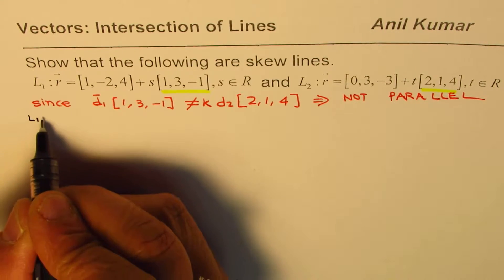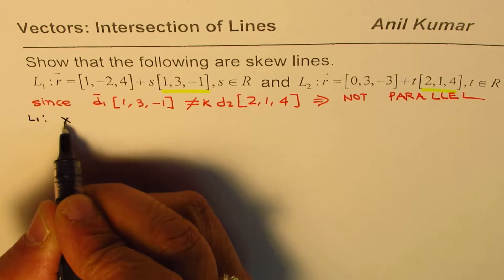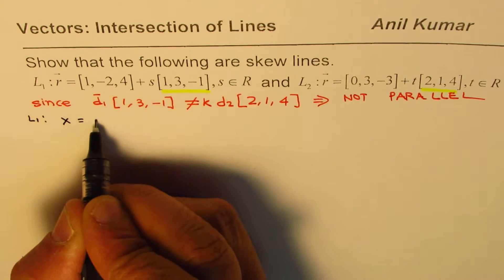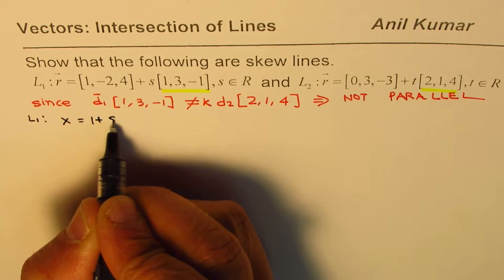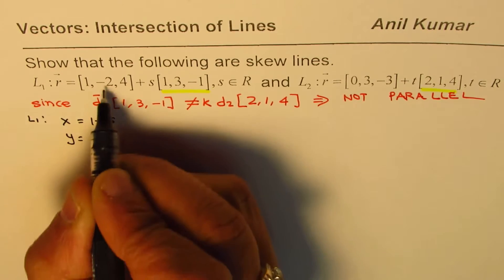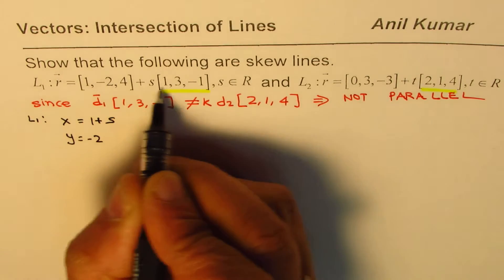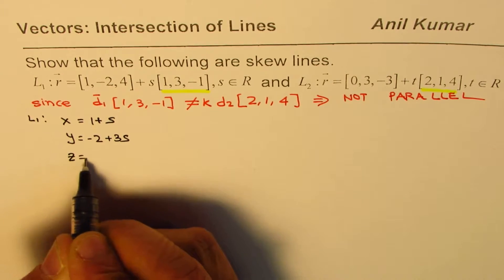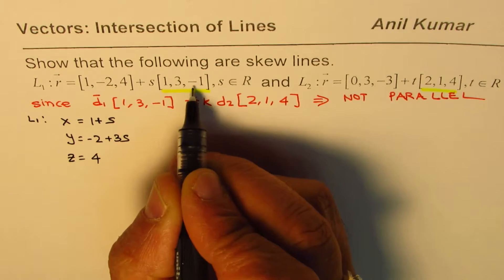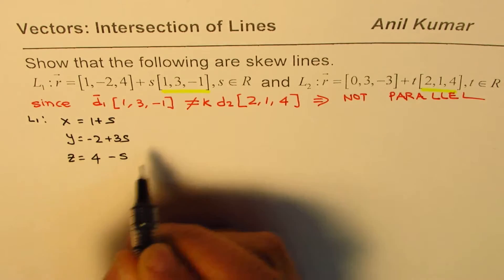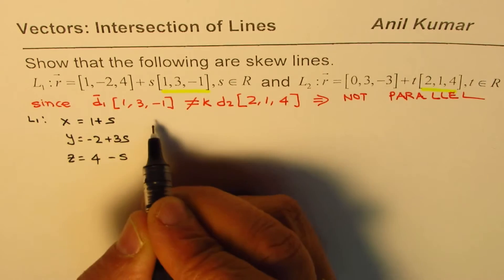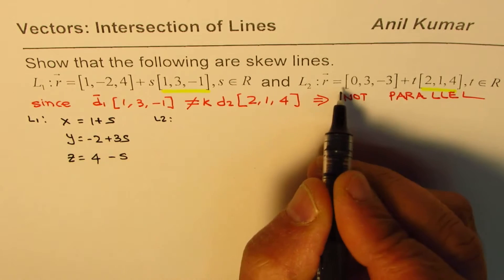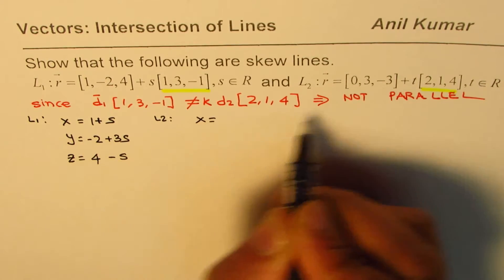For line 1 we can write x equals 1 plus s, y equals minus 2 plus 3s, and z equals 4 minus s.